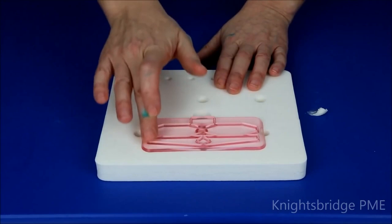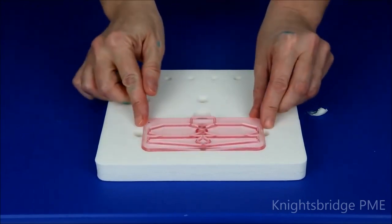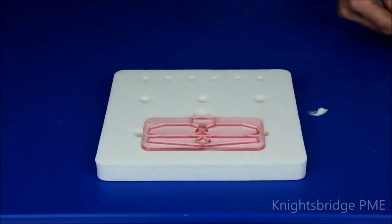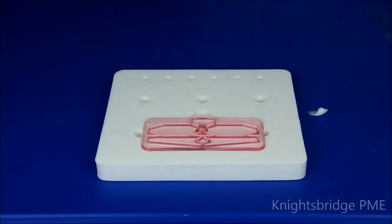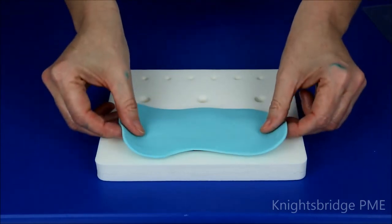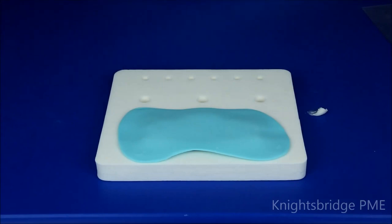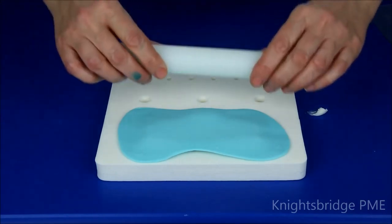Now I'm going to place my paste just across the cutter. I'm using flower paste or gum paste. Now I've placed that over there, I'm just going to roll my rolling pin straight across the cutter and the paste.